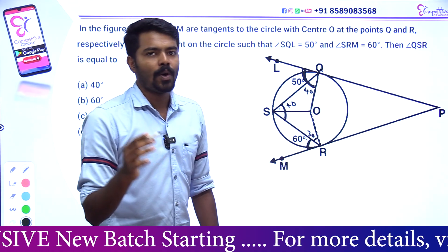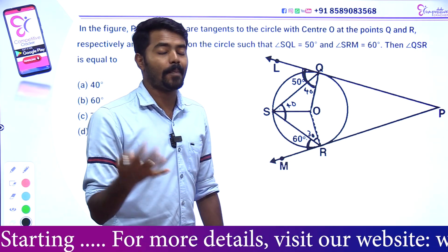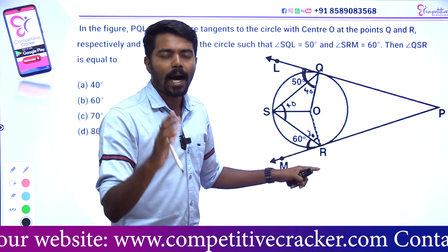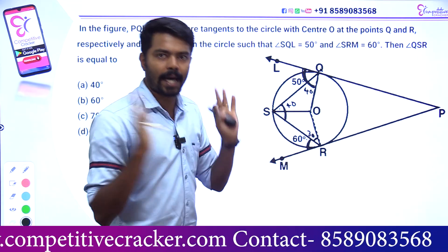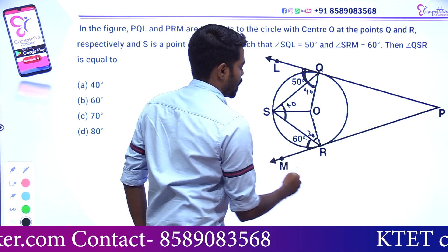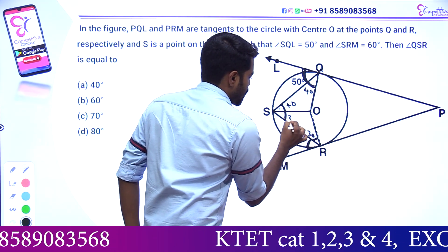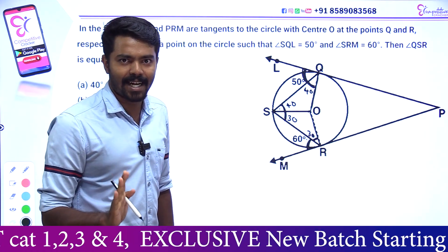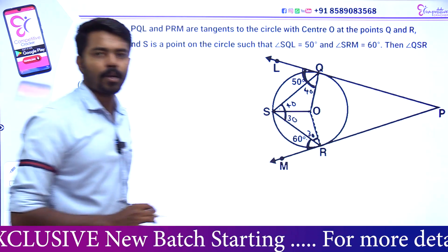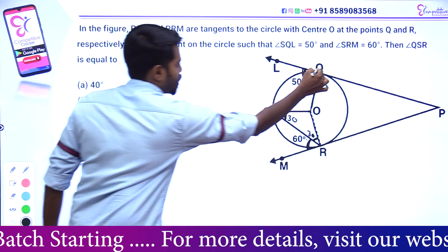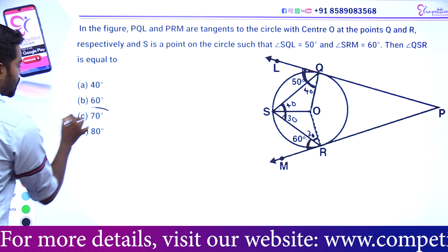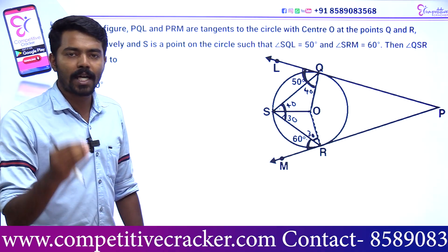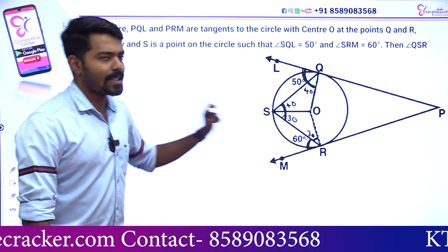Triangle QSO — it's an isosceles triangle because it has two radii as sides, so two angles are equal. Now, 40 plus 30 gives 70. We get total QSR equal to 70 degrees. We get 70. If we get 70 and 70, we will take a clear answer: the answer is 70 degrees.